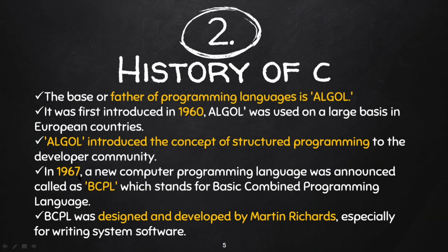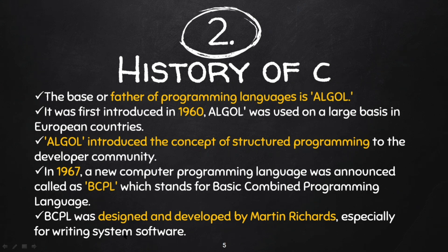In 1967, a new programming language was announced called BCPL, which stands for Basic Combined Programming Language. BCPL was designed and developed by Martin Richard. Martin Richard made this programming language for writing system software, such as Windows, Linux, and Ubuntu.